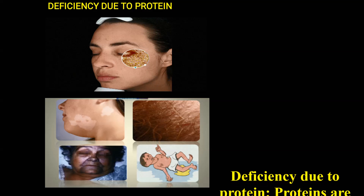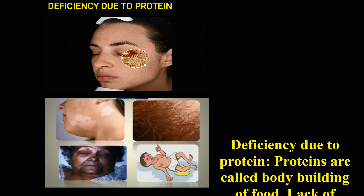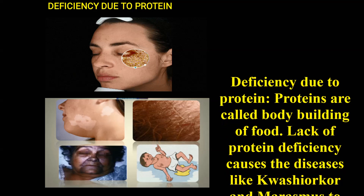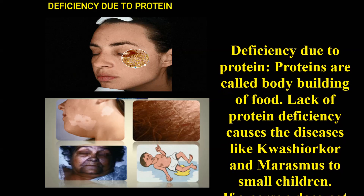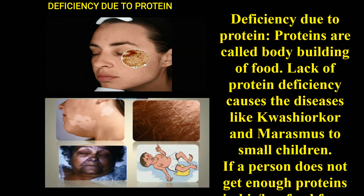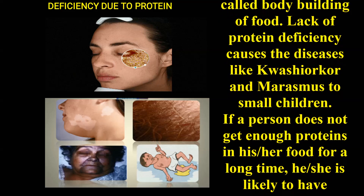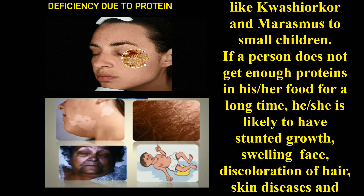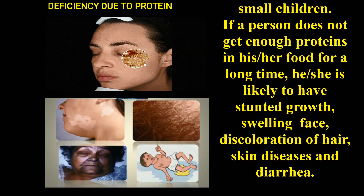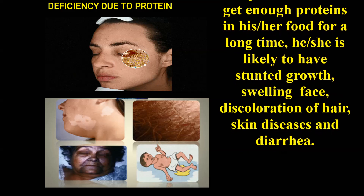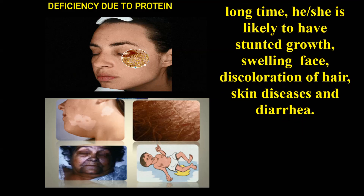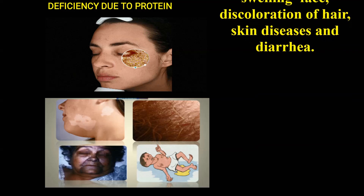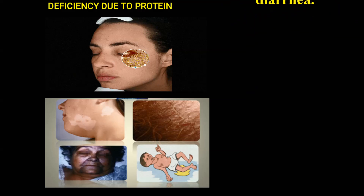Children, let us discuss about the deficiency due to proteins. Proteins are called the bodybuilding food. Lack of protein causes diseases like kwashiorkor and marasmus in small children. If a person does not get enough proteins in their food for a long time, they are likely to have stunted growth, swelling of face, discolouration of hair, and skin diseases like diarrhea.